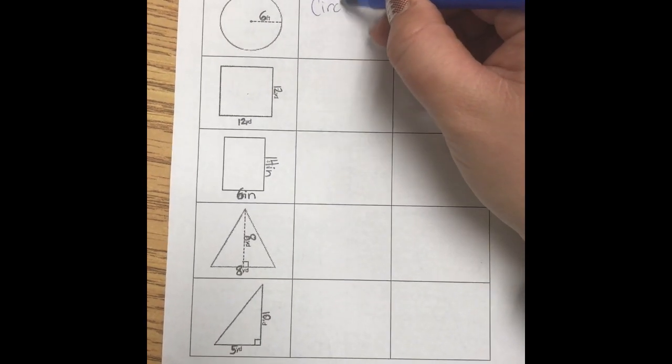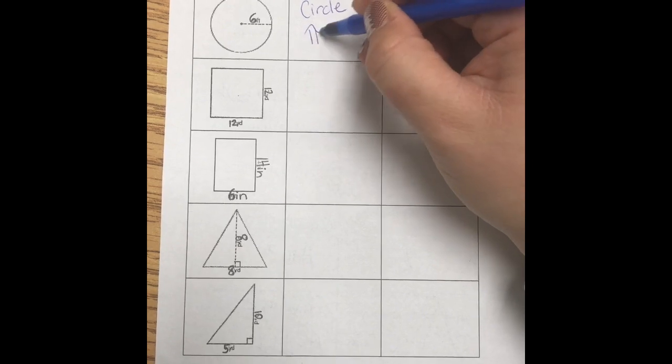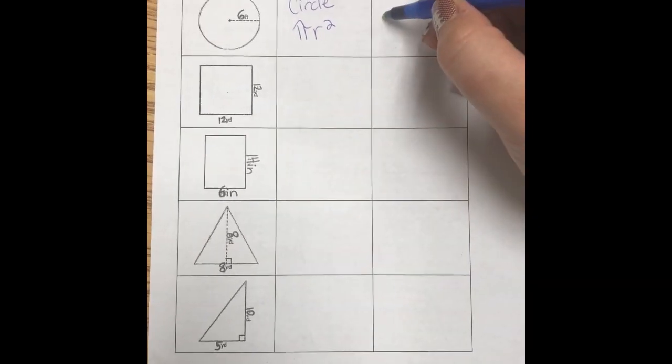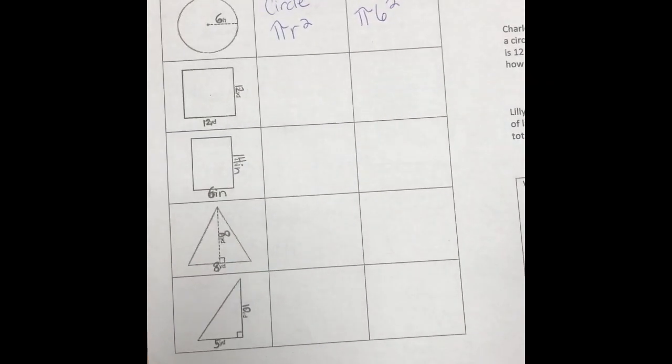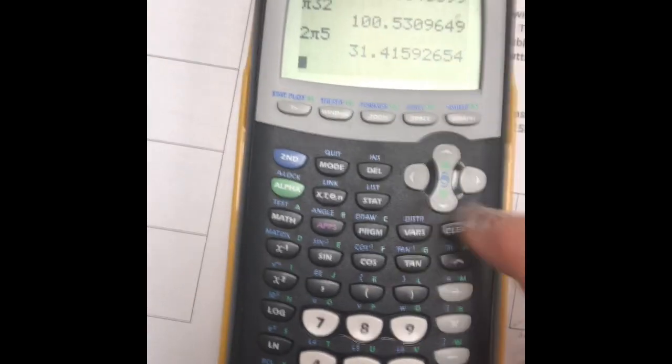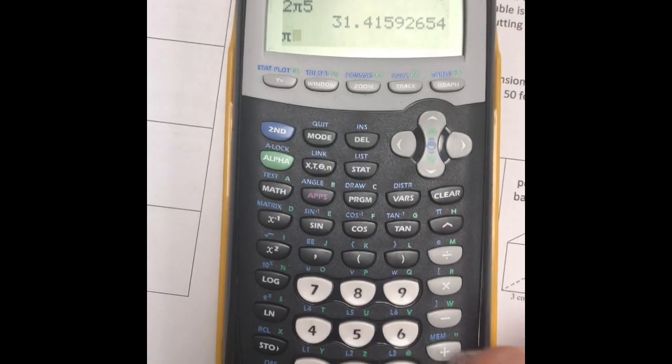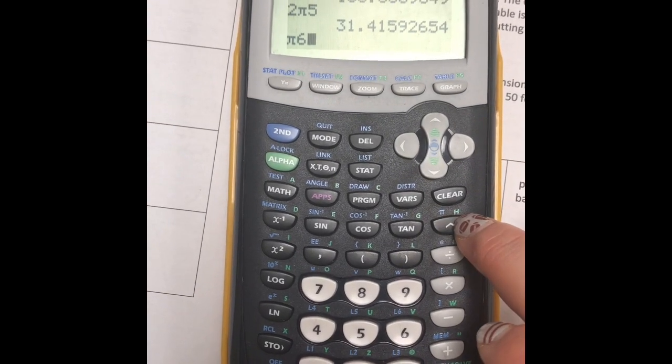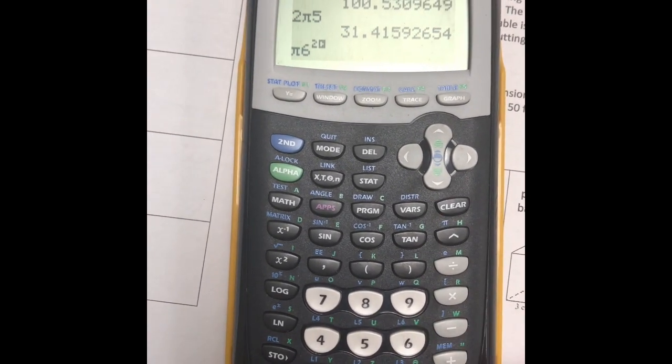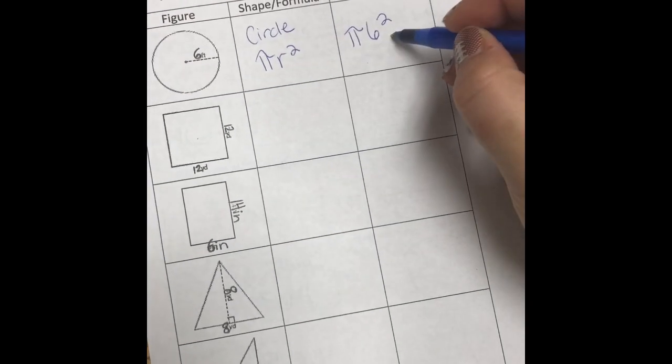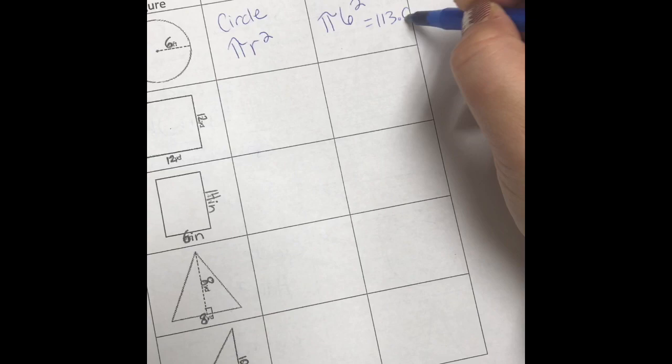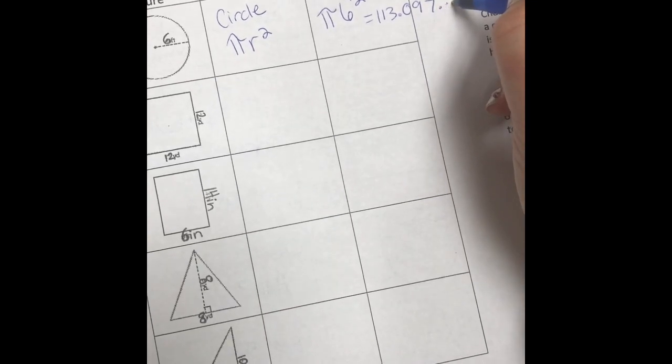So this is a circle. Our formula is pi r squared. So we would plug in our numbers. Pi times the radius squared. So that brings us over to our calculator. Pi times the radius. And then this button right here gives me my exponent box squared. And enter. So 113.097 dot dot dot.